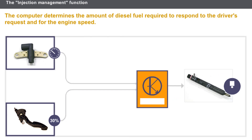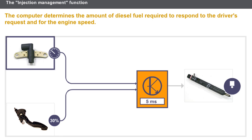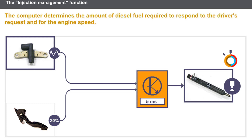The injection computer compares the engine speed of rotation and the driver's request from the accelerator pedal position sensor. The computer then determines the amount of diesel fuel required to respond to the driver's request and engine speed. This quantity corresponds to an injector opening duration, and the double tooth signal from the flywheel sensor allows the computer to determine at which point it must open the injector.